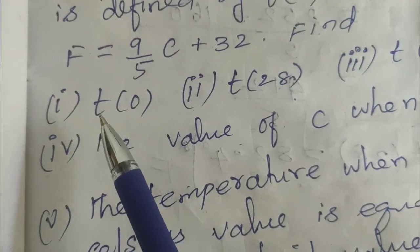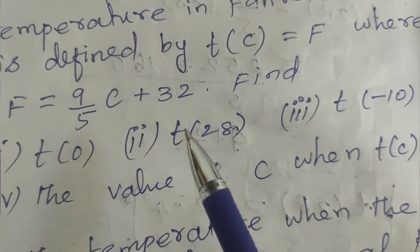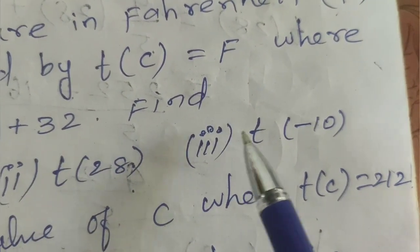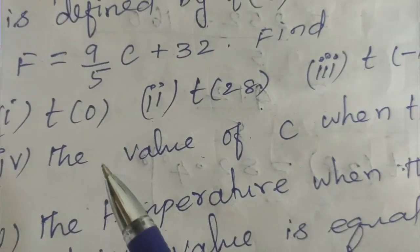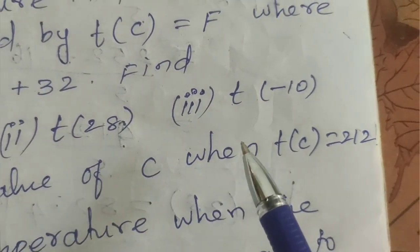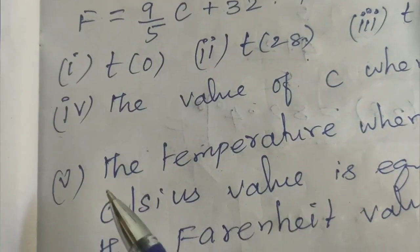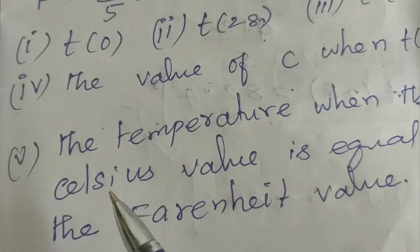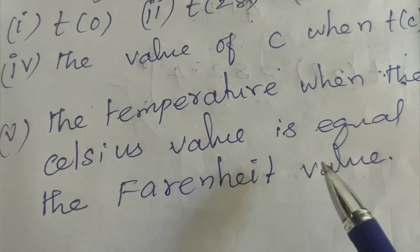Find: question number 1, T of 0. Question number 2, T of 28. Question number 3, T of minus 10. Question number 4, the value of C when T of C equals 212. Question number 5, the temperature when the Celsius value is equal to the Fahrenheit value.